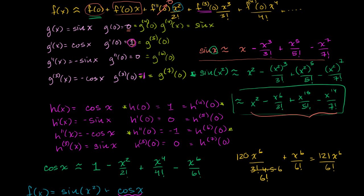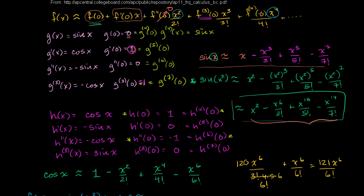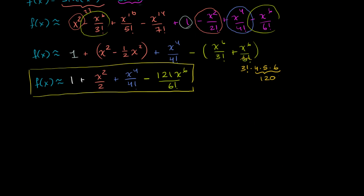So the second degree term is the second derivative of f evaluated at 0 divided by 2 factorial. The fourth degree term is the fourth derivative of f evaluated at 0 divided by 4 factorial. So the sixth degree term...